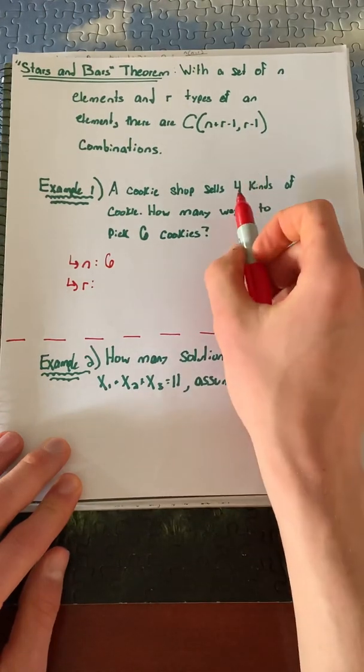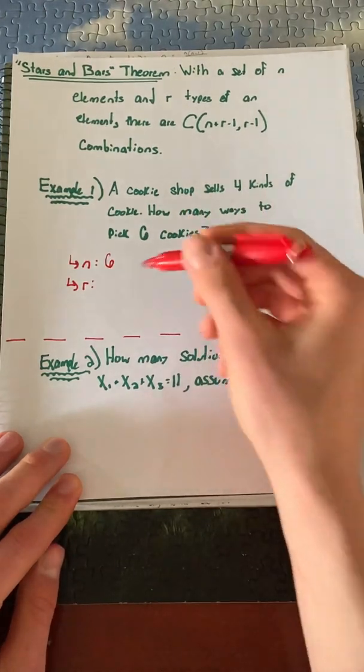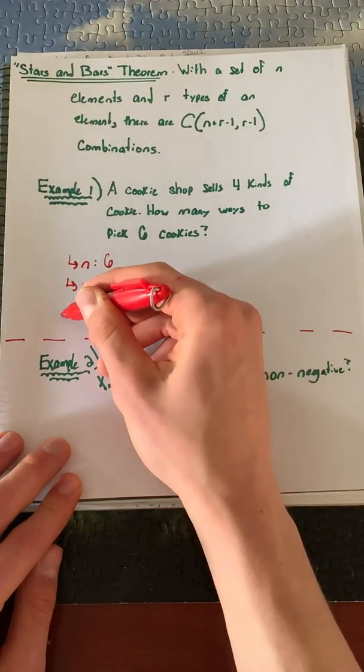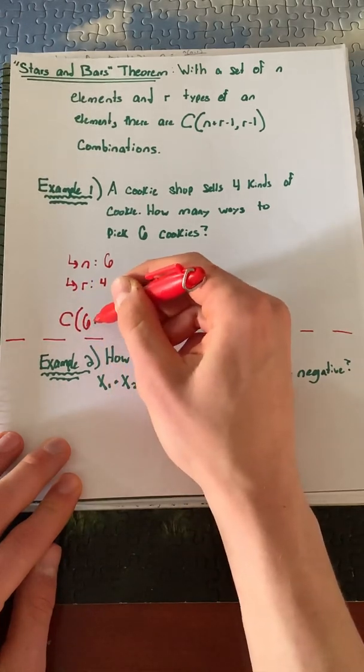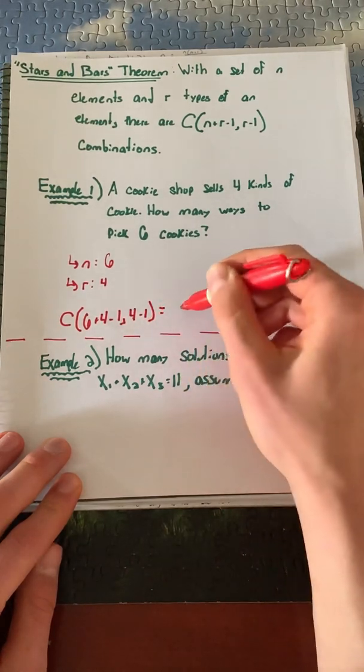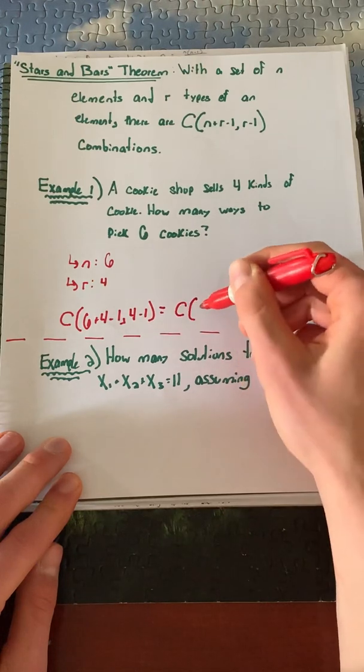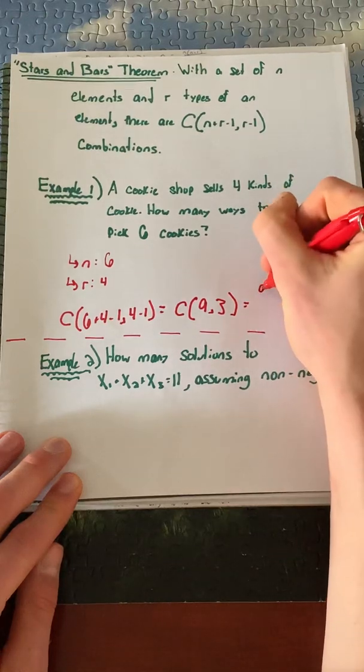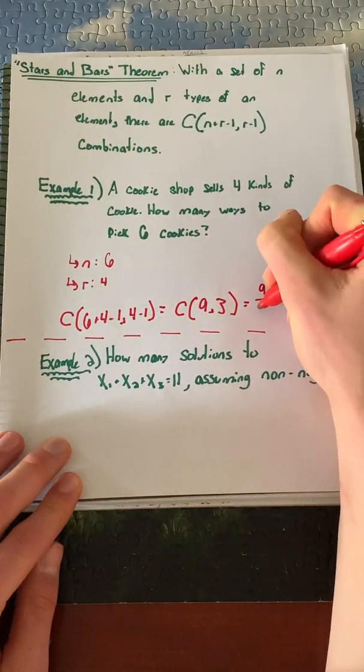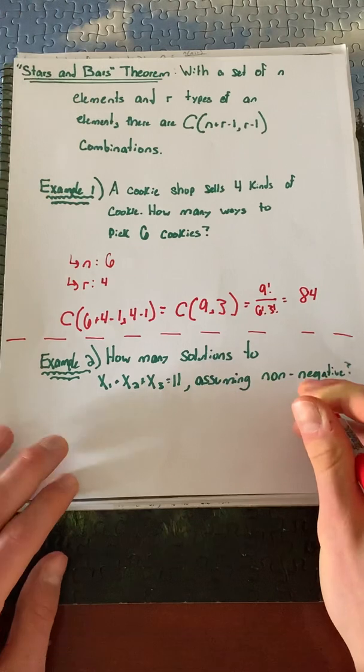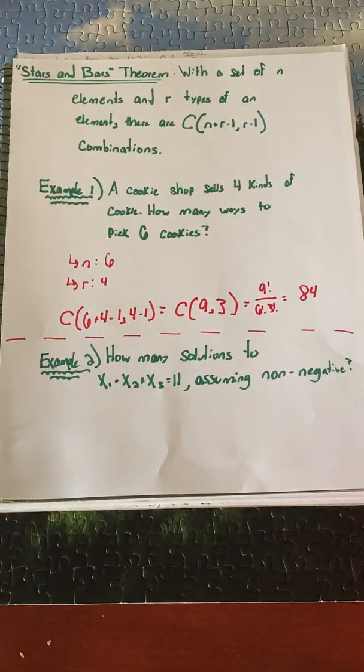For r, there are four kinds of cookies, so r is four. This means we have C(6+4-1, 4-1) different combinations. This equals C(9,3) which equals 9!/(6!×3!), giving us 84 different ways to pick these cookies. You can see how quickly we worked through that problem when we knew what variables to pull out.